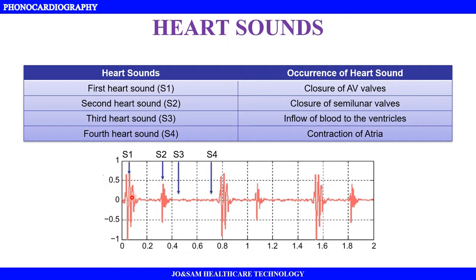The second heart sound, S2, is produced by the closure of the semilunar valves — both the aortic and pulmonary valves. These two are the semilunar valves. S2 is not clearly visible in the waveform.